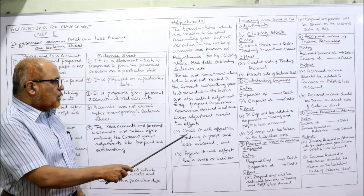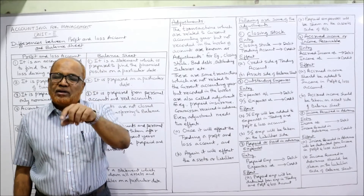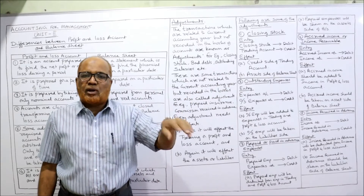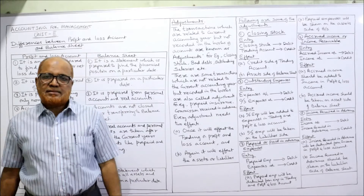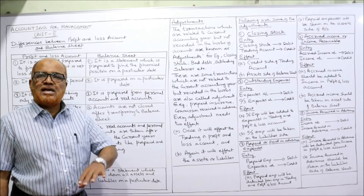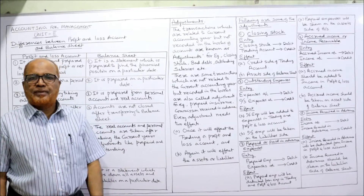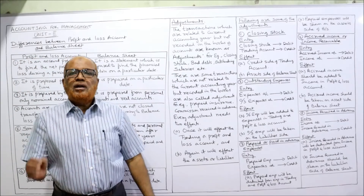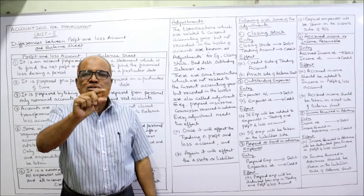Every adjustment has two effects: one effect on the trading and profit and loss account, and the other effect on the balance sheet — either on the assets side or liabilities side. We will now study a few examples of adjustments one by one, covering the journal entry and the effect of each adjustment. The first one is closing stock, which appears in almost every problem.